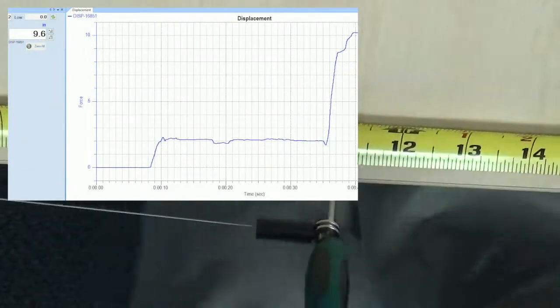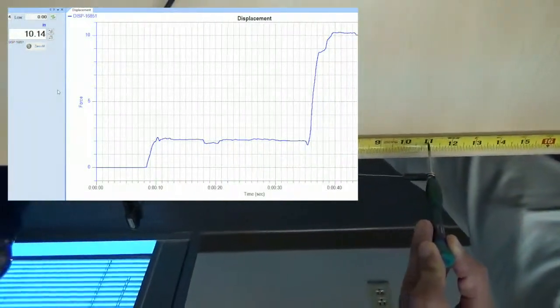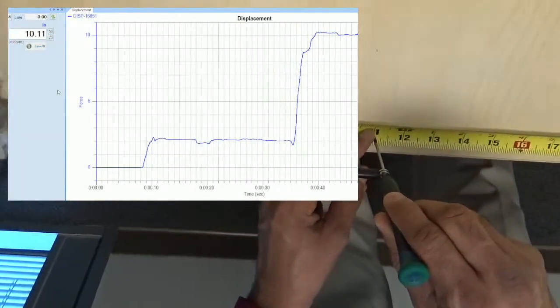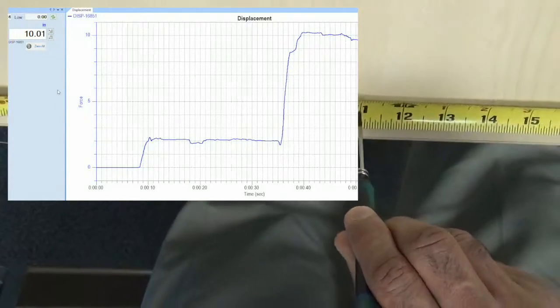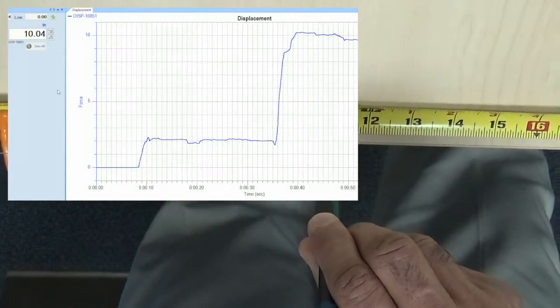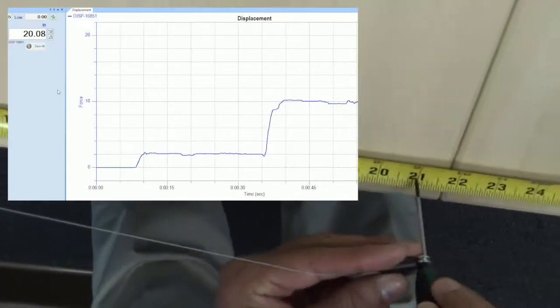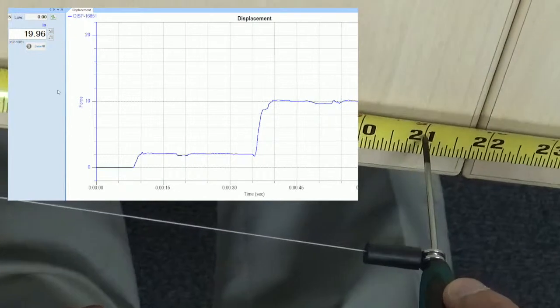Now I can increase the resolution by doing that, so I can see two decimal places not just one. And there you go, it's showing me exactly 10 inches.